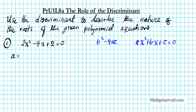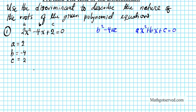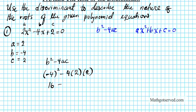So we can now extract a as the first coefficient, which is 2. B is the coefficient of x, which is negative 4, and c is the constant, which is 2. Now we're going to proceed to compute the value of the discriminant, which is b squared minus 4ac. Plugging in these values: negative 4 squared minus 4 times 2 times 2. Simplifying using order of operations: negative 4 squared is 16, minus 4 times 2 is 8, and 8 times 2 is 16. So 16 minus 16 equals 0.